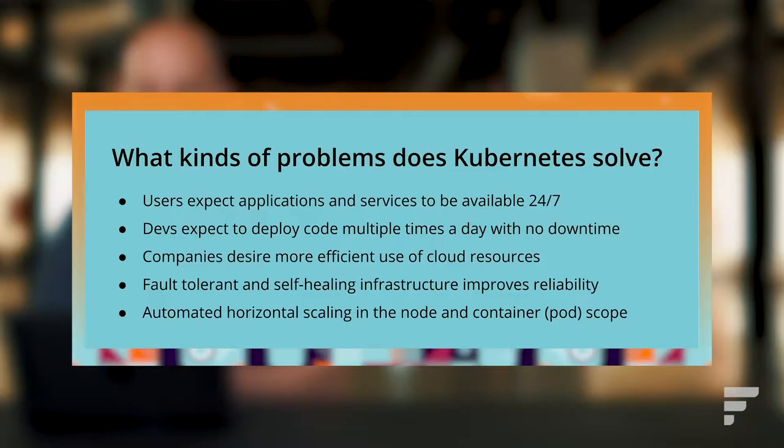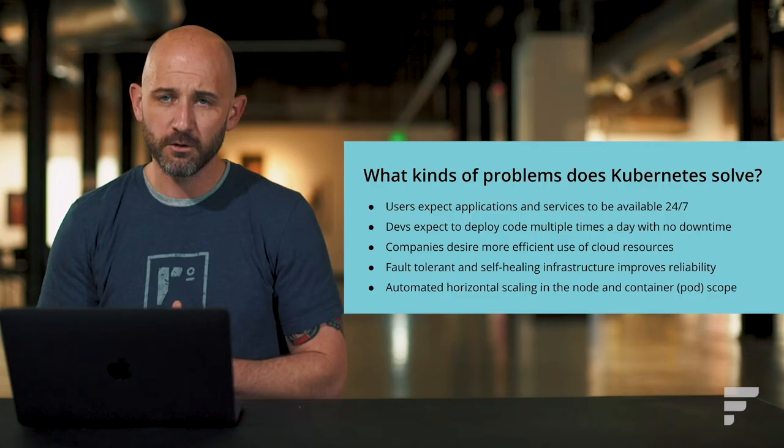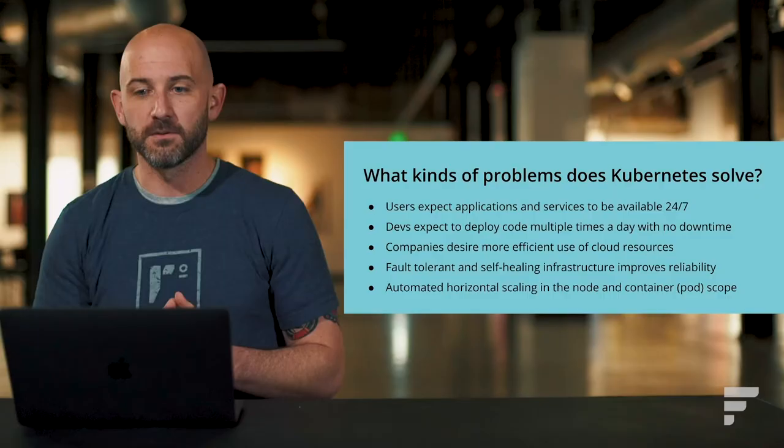Now that people have started to adopt Kubernetes, what sorts of problems does it solve? Users expect applications and services to be available 24/7. With a container orchestration system like Kubernetes, you can schedule processes across many machines, and you can lose a node or individual process without seeing a disruption in service uptime. Kubernetes also offers smart ways to deploy applications — devs expect to deploy code multiple times a day with no downtime, and Kubernetes enables this through rolling updates.